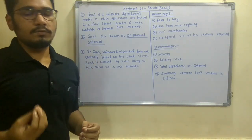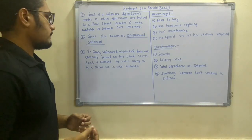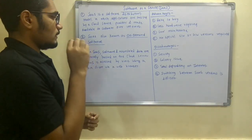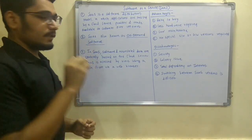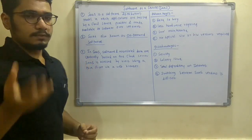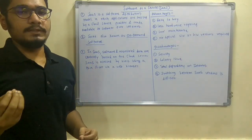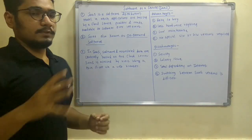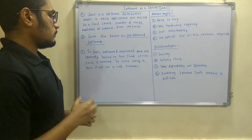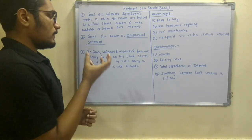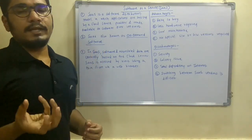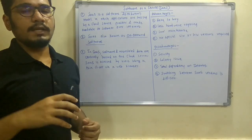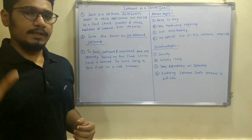In SaaS, the software and all associated data are centrally hosted on the cloud service provider—Google, Microsoft, Rackspace, etc. How are these resources accessed? They are accessed using a thin client, like a browser—mainly browsers like Google Chrome or Safari.